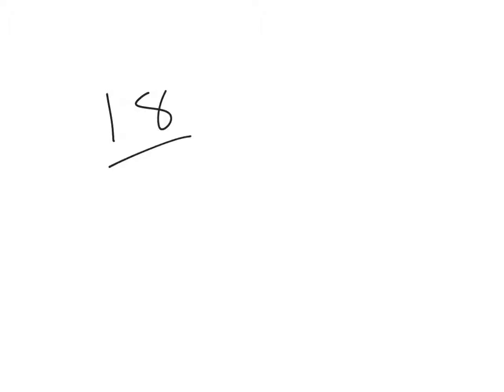Number nine ends up being another dosage calculation. It's ordered as units per hour, and they told us it's 200 units in 500 milliliters. So we take 18 divided by 200 times 500 — that's just a basic dosage calculation.